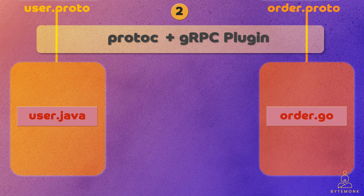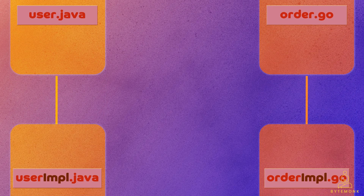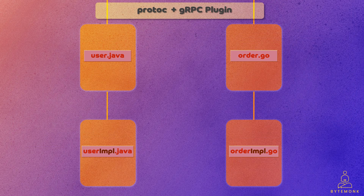Finally, using the generated code, developers implement the server-side and client-side components of the microservices. They write the necessary logic to handle incoming requests, process data, and send responses.